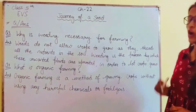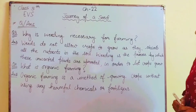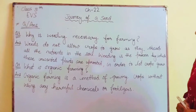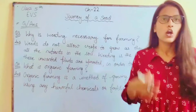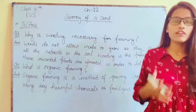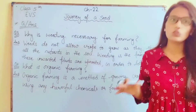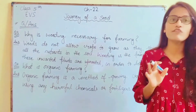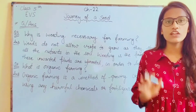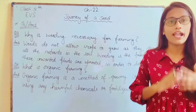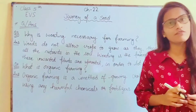What is organic farming? Organic farming is a method of growing crops without using any harmful chemicals or fertilizers. Farmers use only natural things like manure. This is known as organic farming.